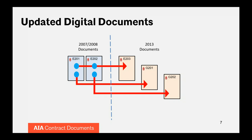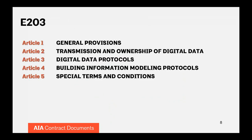So if you need to adapt the forms based on project circumstances, you can do so without amending all of the agreements on a project. Graphically, you can see how we tried to achieve that: the G-201 now covers general digital data, the G-202 covers building information modeling specifics, and the E-203 is an exhibit attached to the agreement that sets the baseline for both digital data and BIM on the project.